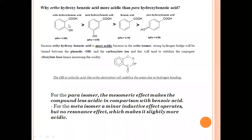This applies to the ortho position where the hydroxyl group is on a neighboring carbon atom. For the para isomer, the mesomeric effect makes the compound less acidic compared to benzoic acid. For the para isomer, only a minor inductive effect operates but no resonance effect. The hydroxyl group at the para position is too far from the carboxylate ion, so it is unable to maintain the resonance stabilization property, resulting in less stability, less resonance, and less acidity.